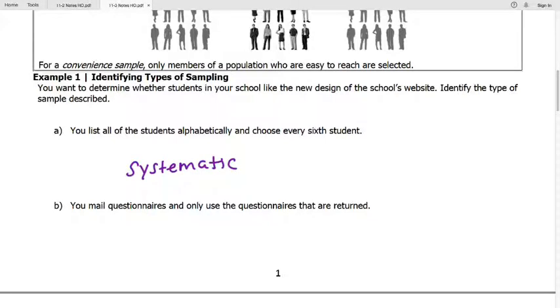All right, part B, we mail questionnaires and only use the questionnaires that are returned. You have an option of completing the survey and then mailing it back. So this is an example of self-selected surveying or sampling.